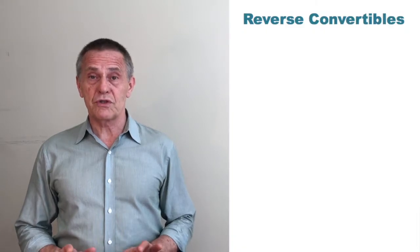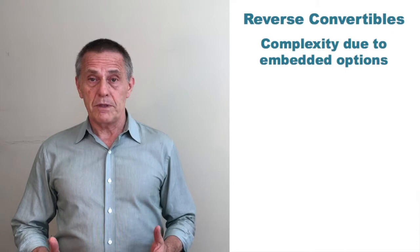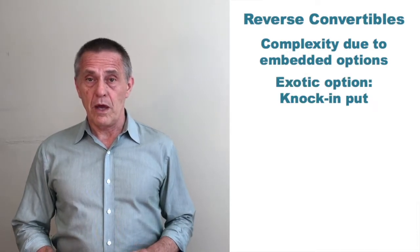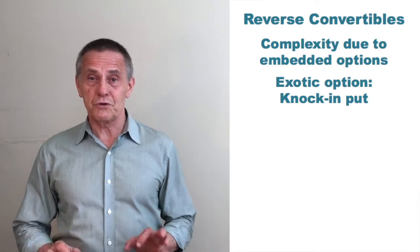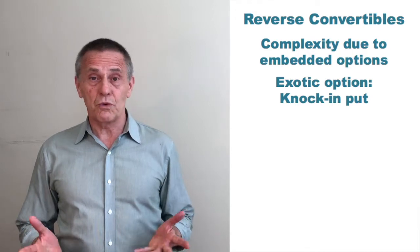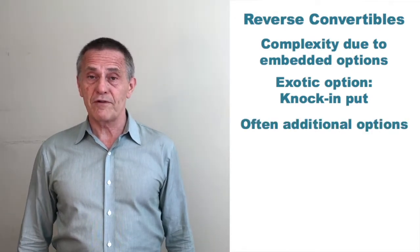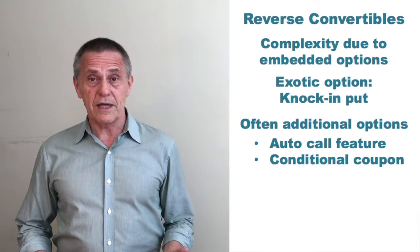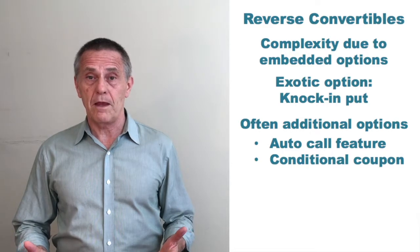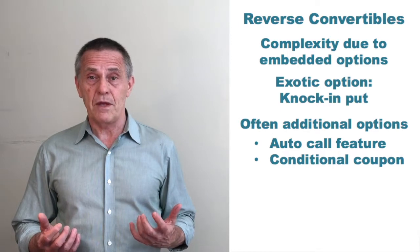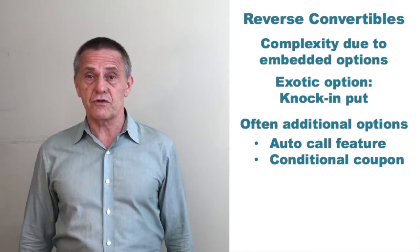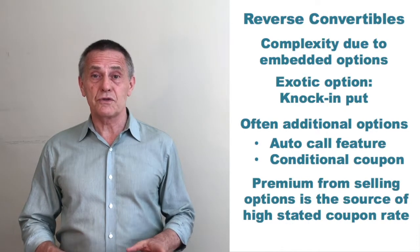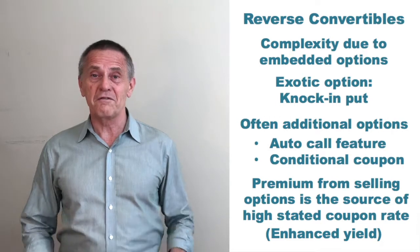One of the primary sources of the complexity is the embedded option. With reverse convertible securities, there is normally an exotic option embedded inside — typically what is known as a knock-in put option, which we'll describe later on. Many reverse convertibles also have an auto-call feature, that is, they're automatically callable under certain conditions, and many will also have conditional coupons that are payable only under certain circumstances. It's all those options that are the source of the enhanced yield. By selling all these options as part of the structured note, the investor has the opportunity to receive the premium from selling those options — and that's the source of the higher coupon rate, again, if things work out as the investor hopes.